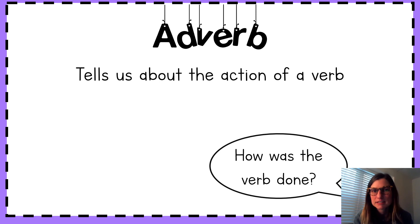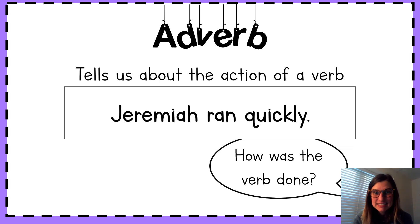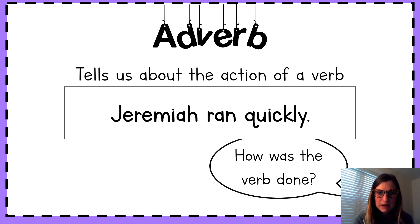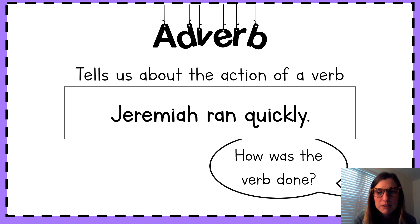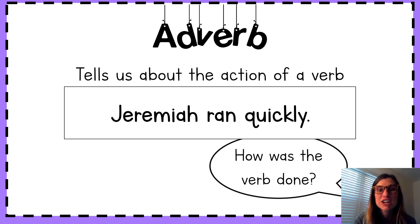Let's look at a sentence. In this sentence, there's a noun, a verb, and an adverb. Who's our sentence about? Let's read the sentence and find out. Jeremiah ran quickly. So who's our sentence about? What's that noun? Yes, Jeremiah is our noun.